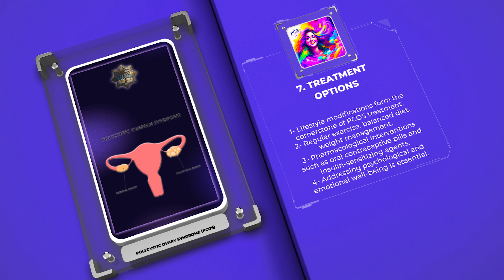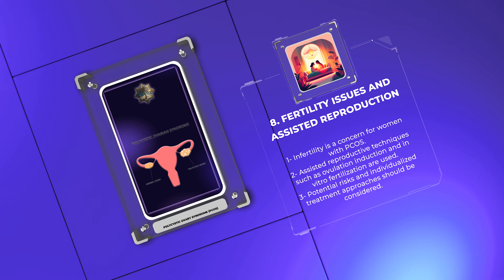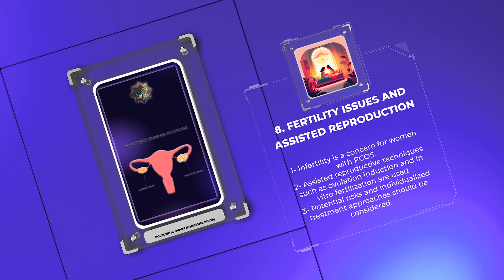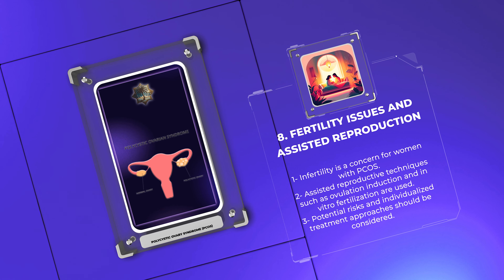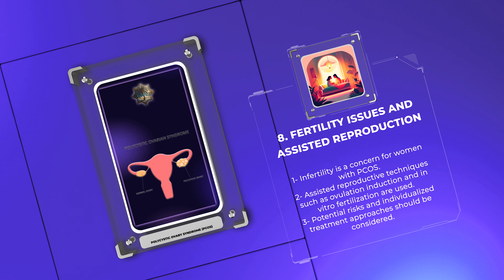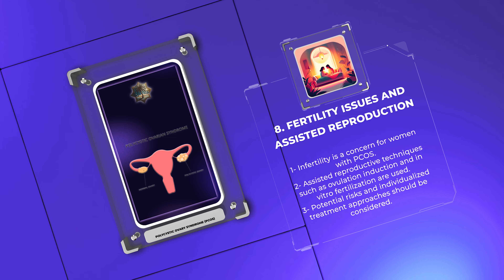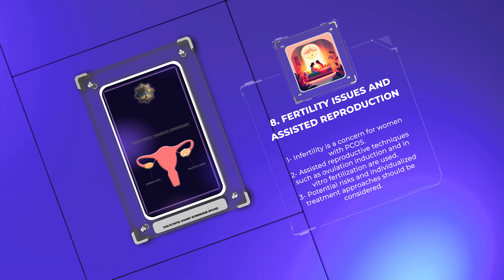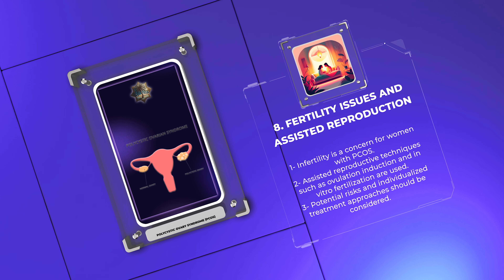Fertility issues and assisted reproduction: Infertility is a significant concern for women with PCOS due to anovulation or irregular ovulation. Assisted reproductive techniques, such as ovulation induction with medications like clomiphene citrate, gonadotropin administration, and in vitro fertilization (IVF), are common strategies employed to enhance fertility. However, it's essential to consider potential risks such as ovarian hyperstimulation syndrome, and individualized treatment approaches are important.